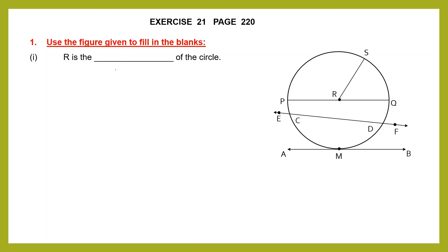R is the blank of the circle. So look out for the letter R — you can see it here. That means R is the center of the circle.